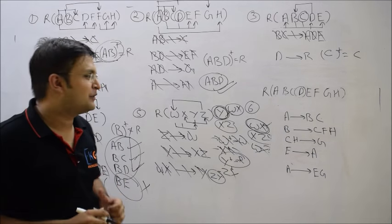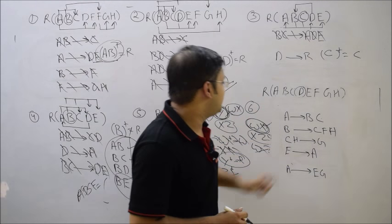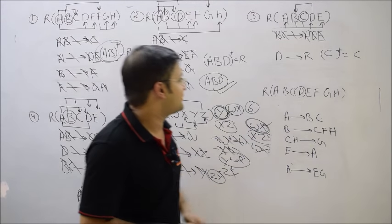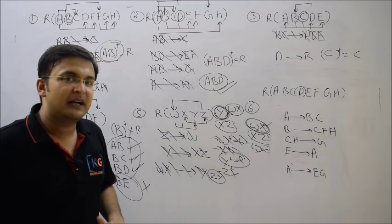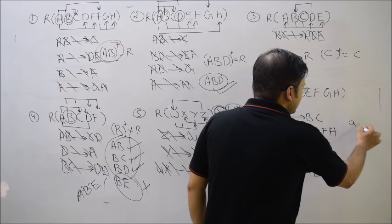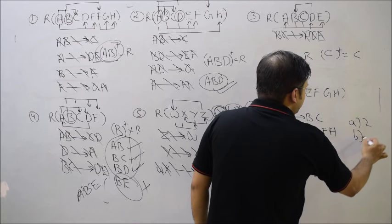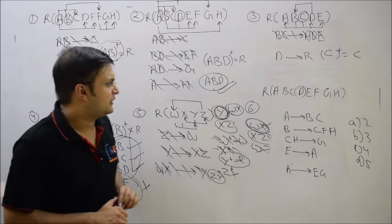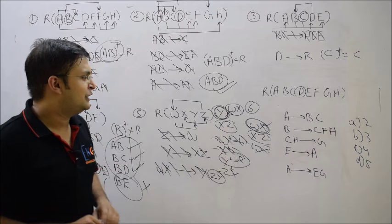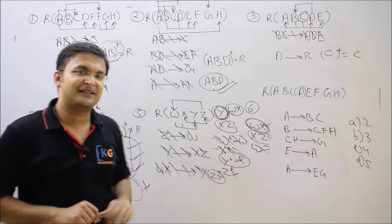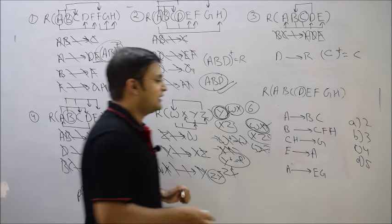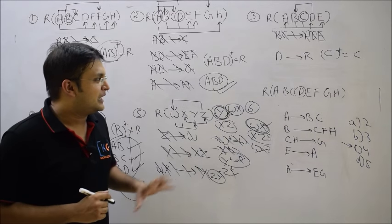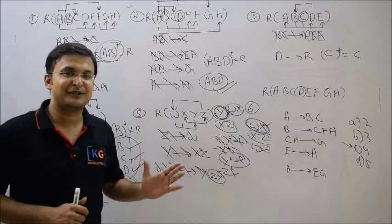Now let's try question six, which was asked in GATE 2013 for two marks. There is a relation with a set of functional dependencies, and you have to identify how many candidate keys exist — the options were approximately 1, 2, 3, 4, and 5. Try to solve this as an assignment. The correct answer is four. Try to find out whether there are four candidate keys or not, and if you get confused, I will discuss this question in the next video.